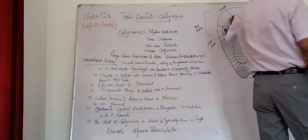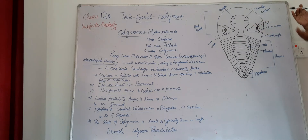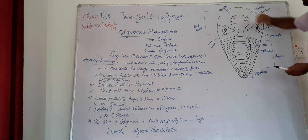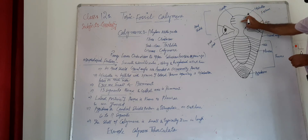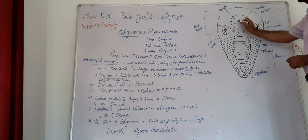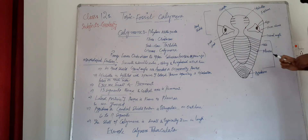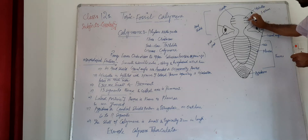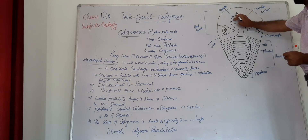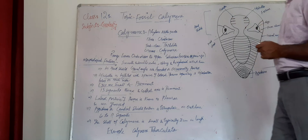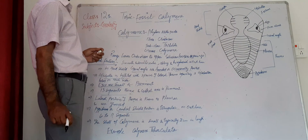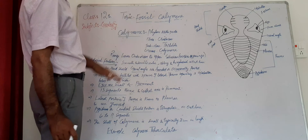The glabella, which is the part of the head, is inflated — meaning it appears raised. There are three pairs of glabular furrows; in between these furrows are the glabular lobes. So three pairs of glabular furrows are separated by three glabular lobes on each side — three on one side and three on the other.